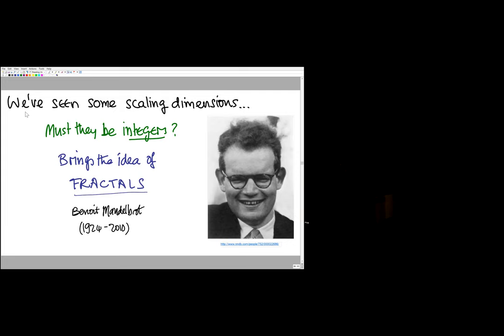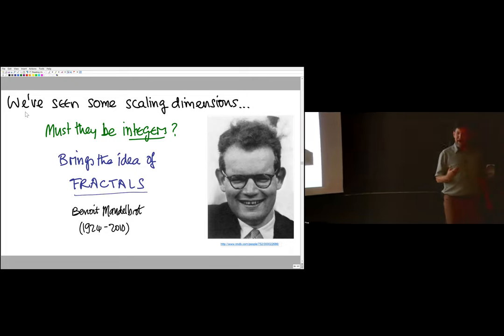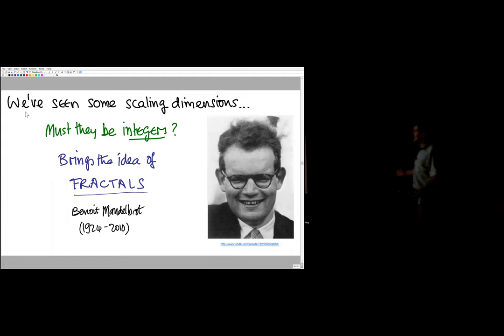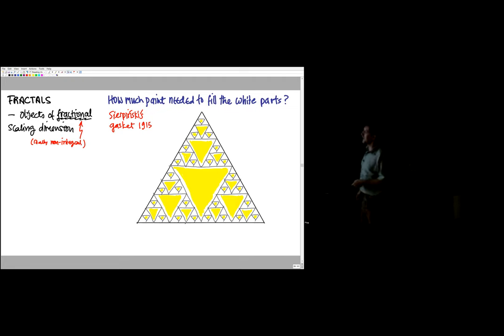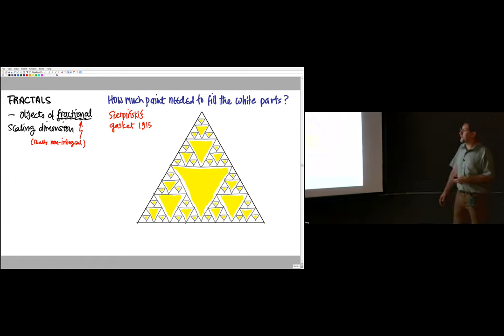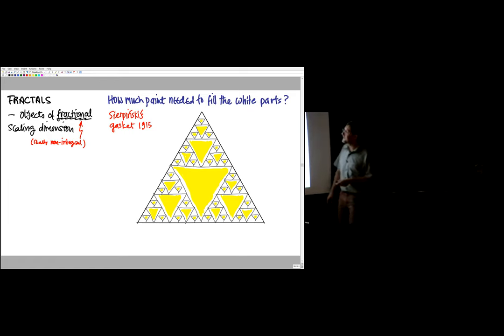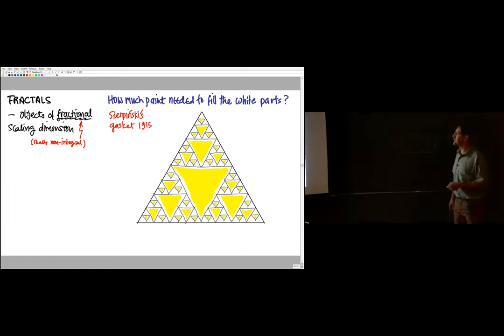So we looked at things doubling. We looked at things going up by four and by eight. Maybe we can have changes with scale that are not governed by integers. This idea was made famous by a mathematician, French mathematician Benoit Mandelbrot, in the second half of the 20th century. So we're going to have a look at strange scalings that don't go quite like the ones we just looked at. This geometrical object has a name: it's called a Sierpinski gasket after the Polish mathematician.